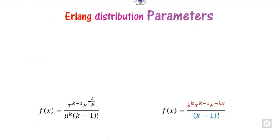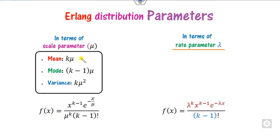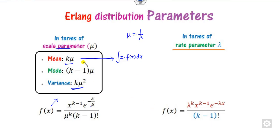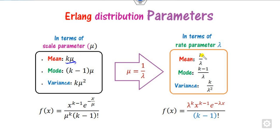The Erlang distribution has two different parameter forms: shape and scale (K and Mu), or shape and rate (K and Lambda). The mean can be found by integrating x times f(x). The variance can similarly be derived from the PDF. Since Mu = 1/Lambda, substituting into the mean formula gives the mean in terms of Lambda, so there is no need to rederive it separately.